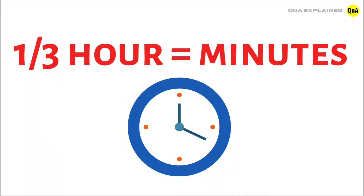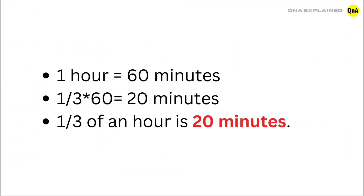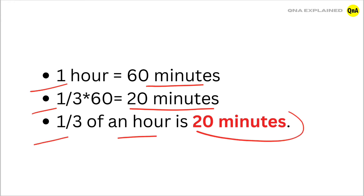1 by 3 of an hour equals how many minutes? Since 1 hour equals 60 minutes, 1 by 3 into 60 equals 20 minutes. So 1 by 3 of an hour is 20 minutes.